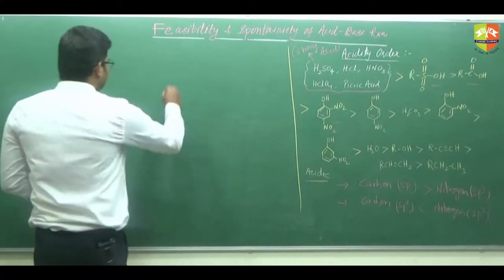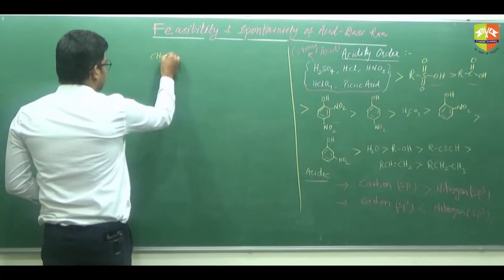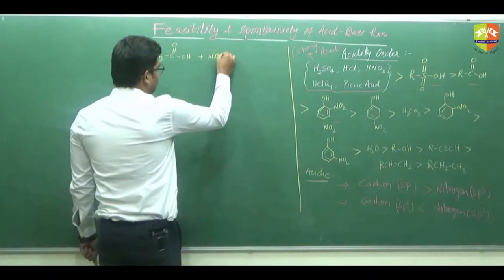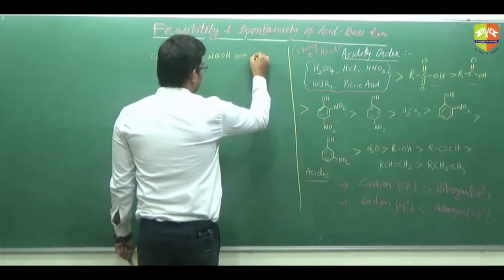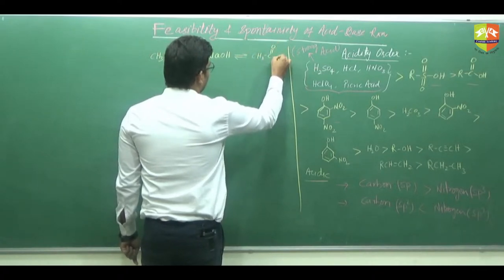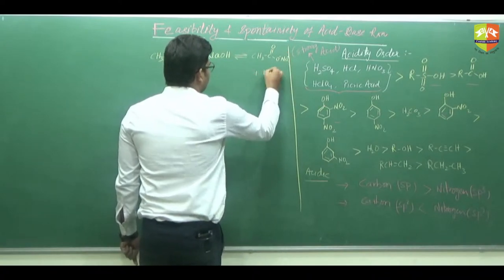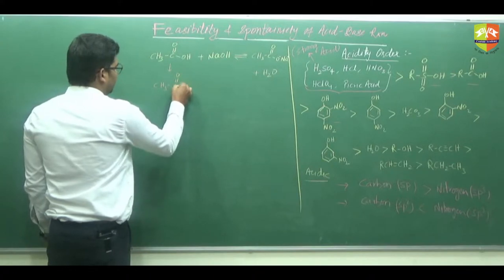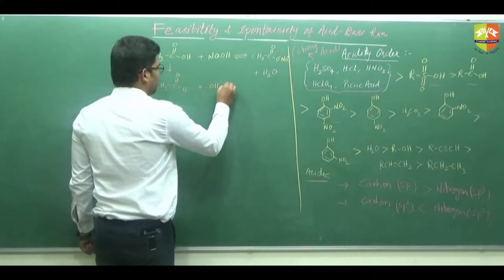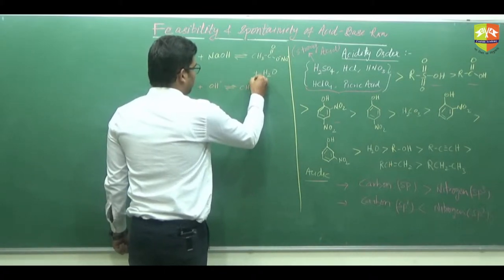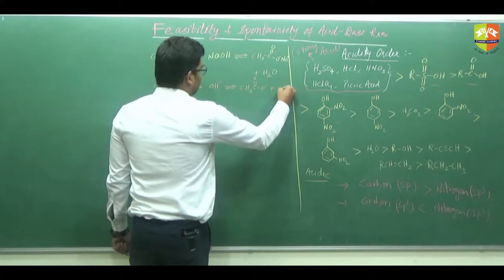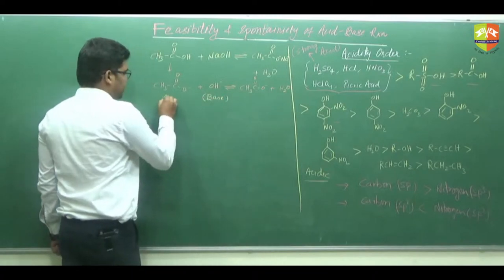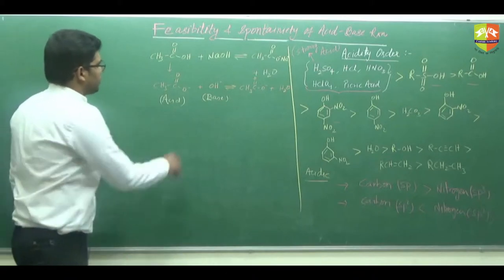Now, when we have an acid-base reaction — for example, suppose CH3COOH reacts with NaOH — it forms CH3COO⁻Na⁺ plus H2O. So if I write down the ionic form: CH3COO⁻ plus OH⁻ gives CH3COO⁻ and plus H2O. So this is base OH⁻ and this is acid CH3COOH.